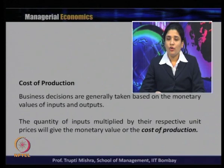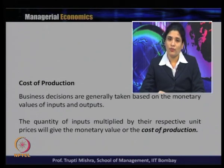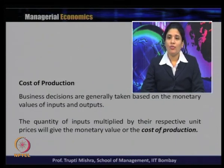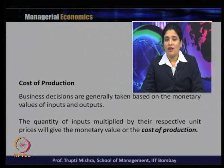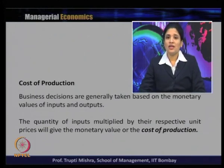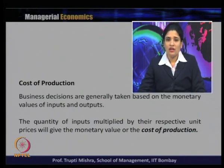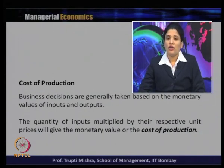The quantity of input multiplied by the respective unit price will give the monetary value or the cost of production. The quantity of inputs may be labour, capital, raw material, technology, or time. In all these cases, when the quantity gets multiplied with the respective unit price, that gives the monetary value or the cost of production.